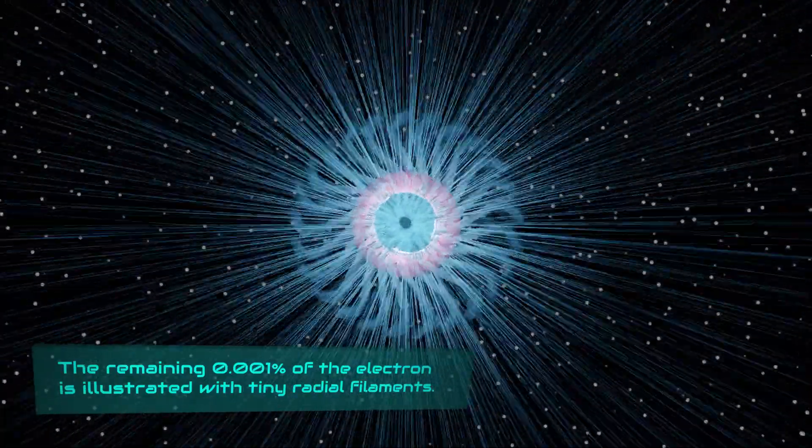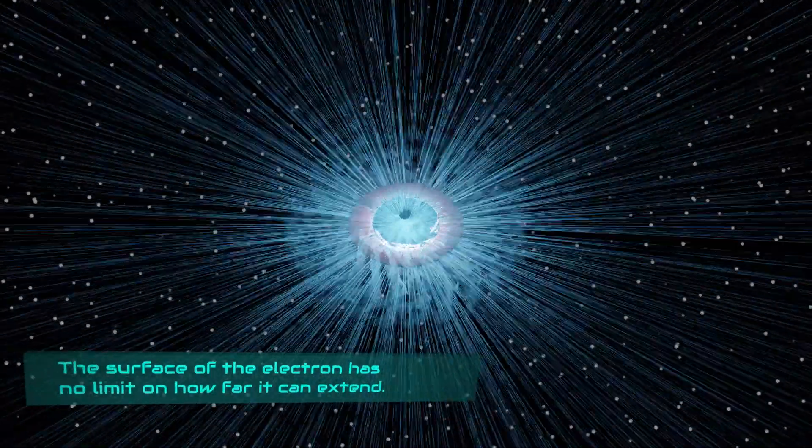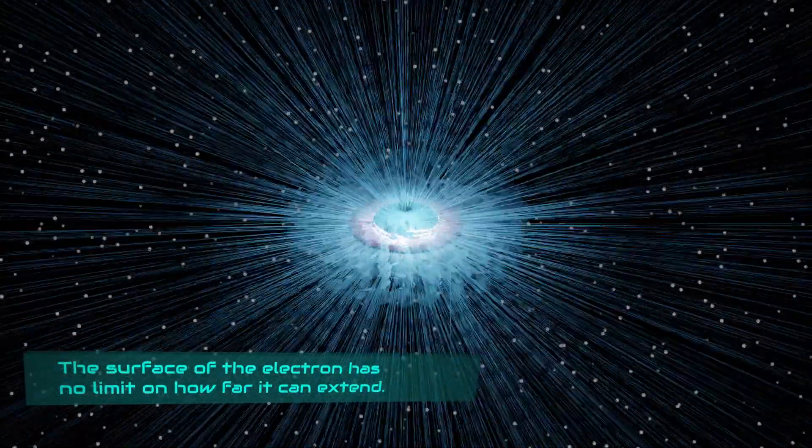The remaining 0.001% of the electron is illustrated with tiny radial filaments. The surface of the electron has no limit on how far it can extend.